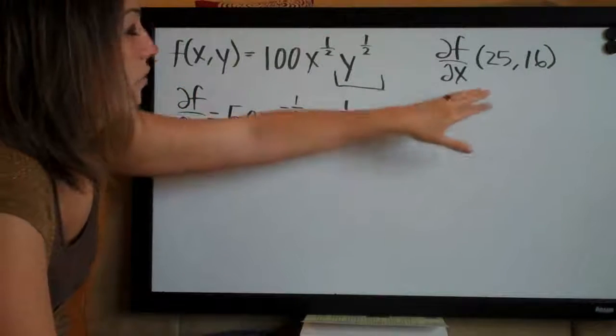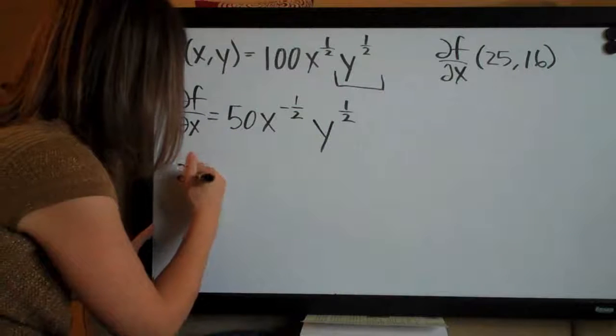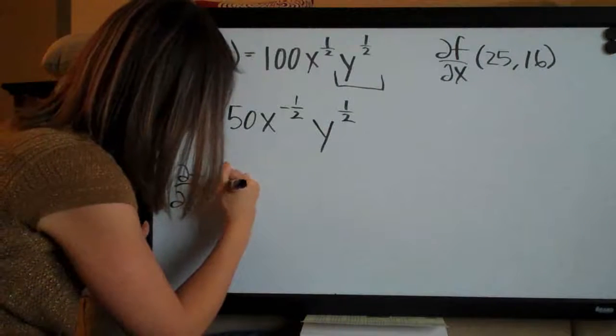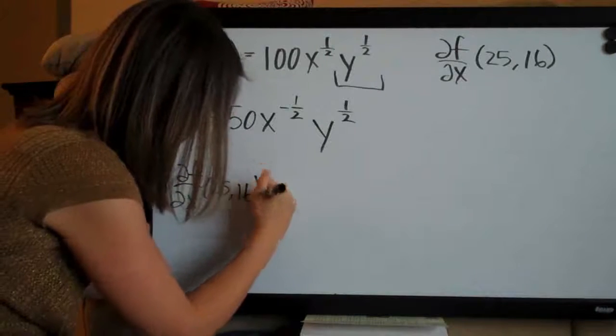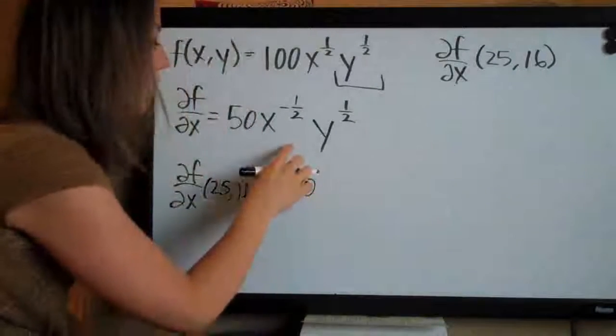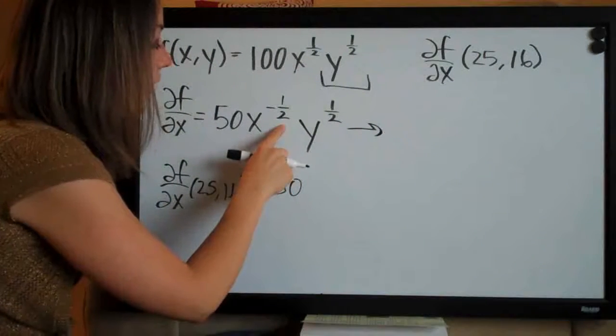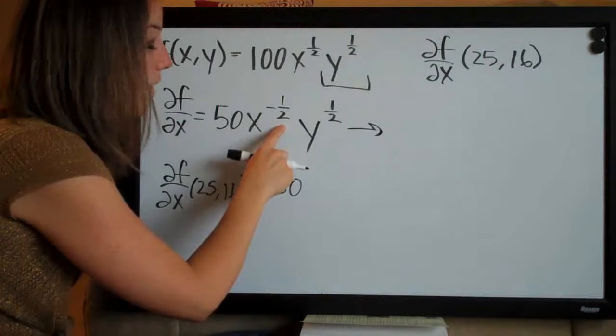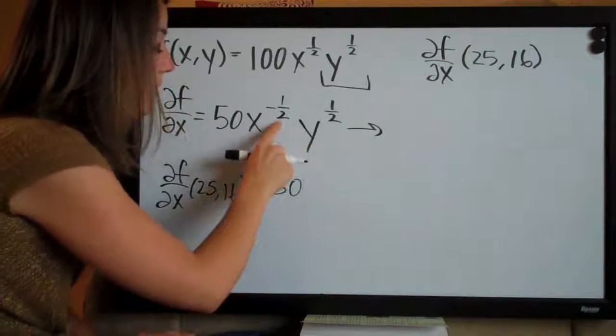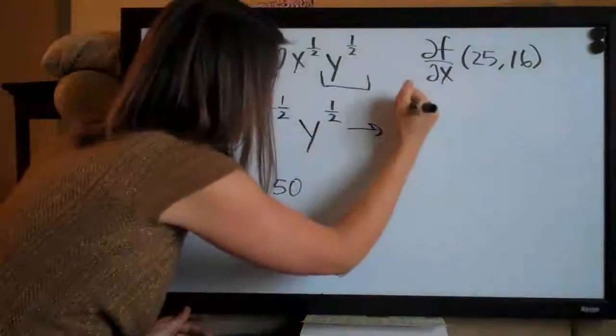So now what we need to do is go ahead and plug in the point (25,16). So when we plug in (25,16), we're plugging in twenty-five for x and sixteen for y. And let's go ahead actually before we do that and simplify this. Since we have a negative exponent here in the numerator of this function, we can make this a positive exponent by moving it to the denominator.